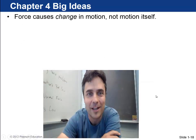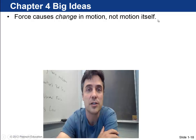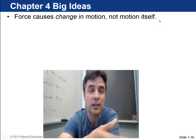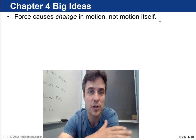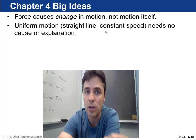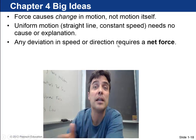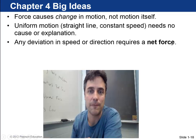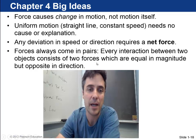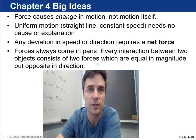Hi there, me again. Let's go over the big ideas that were in chapter four. Force causes change in motion, not the motion itself. So something can be going along at a constant velocity with zero force on it. Next is that uniform motion, straight line constant speed, needs no cause or explanation. Any deviation in speed or in direction requires a net force. And then lastly, this idea that forces always come in pairs. Every interaction consists of two forces acting on two different objects.